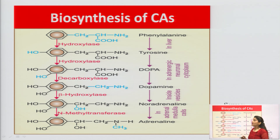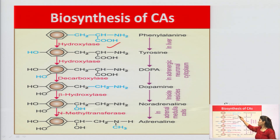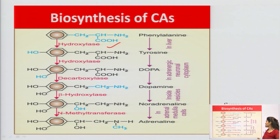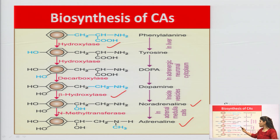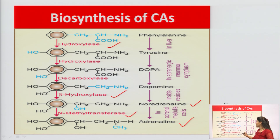Phenylalanine is converted into tyrosine in the presence of hydroxylase enzyme. Tyrosine is then converted into DOPA in the presence of hydroxylase enzyme, and DOPA is further converted into dopamine in the presence of decarboxylase enzyme. Dopamine is converted into noradrenaline with the help of beta-hydroxylase enzyme, and noradrenaline is converted into adrenaline in the presence of N-methyltransferase enzyme.